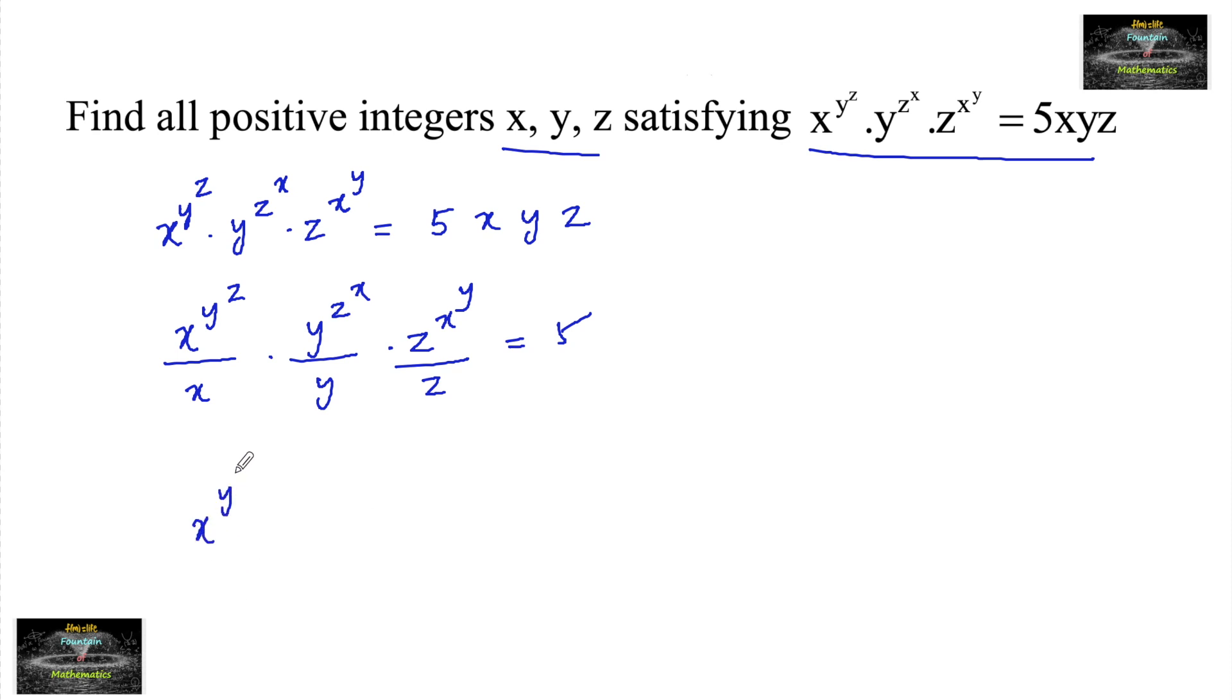So that is x to the power of y to the power of z minus 1, y to the power of z power x minus 1, z to the power of x to the power of y minus 1 which is equal to 5. Since xyz are all positive integers, we can write this 5 in terms of 5 into 1 into 1, or 1 into 5 into 1, or 1 into 1 into 5. These are the 3 possibilities.